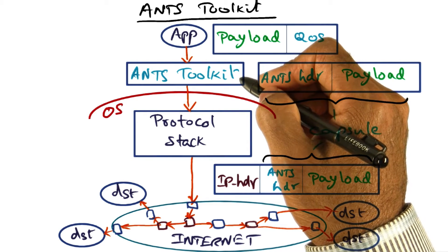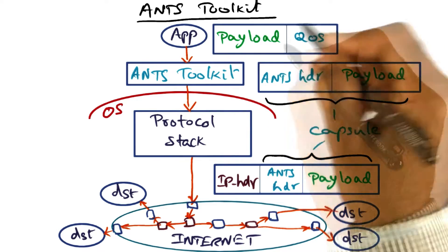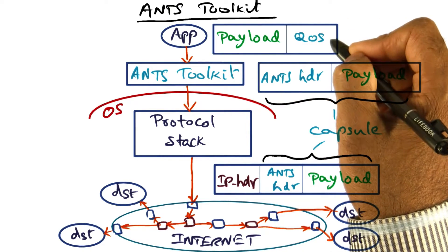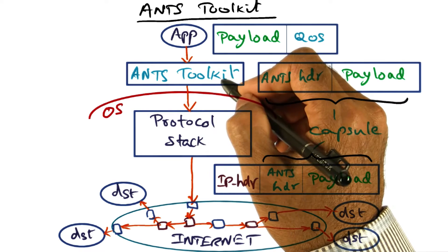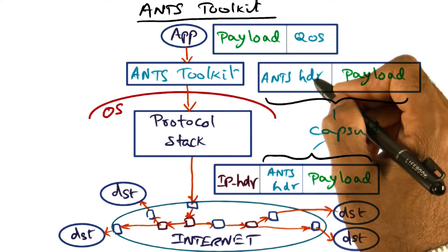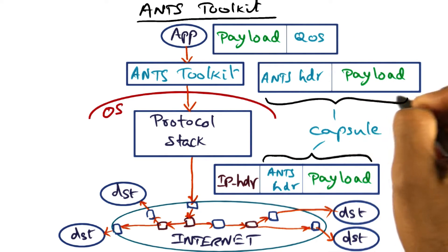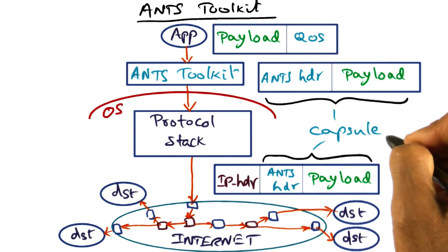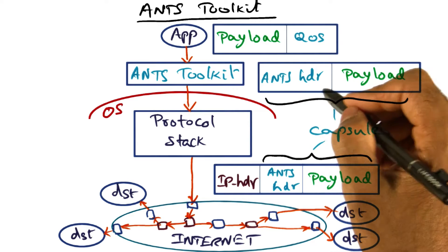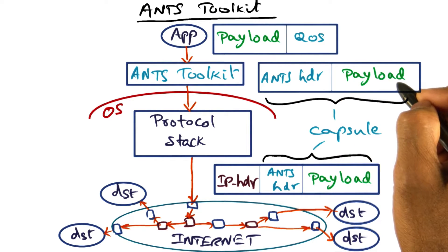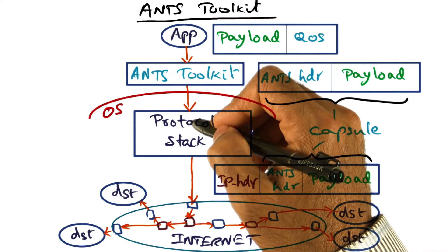This toolkit is available for the application programmer to say: here is my payload and here are my quality of service constraints. What the ANTS toolkit does is create an ANTS header for this payload. So the new payload is called a capsule, and the capsule consists of an ANTS header and the actual payload. This is what is given to a normal operating system protocol stack.